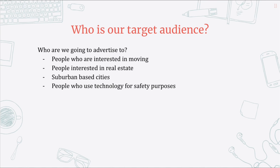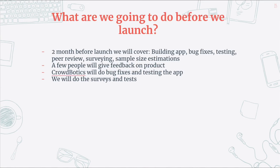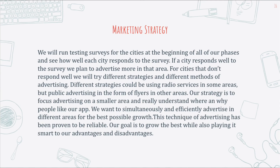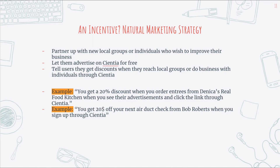Here's our market strategy presented to you by Cultural Hub. Our target audience are people interested in moving, real estate, and suburban-based cities. We will advertise in public places such as buses, radio, etc. We will also selectively advertise on online platforms such as LinkedIn, YouTube, and Facebook. In the two months before the release, the app will be made and tested by Crowdbotics. We will also be getting feedback on the app by asking people to try it. First, we run surveys and see how well ECU responds. If ECU responds well, we will generally advertise more of it; if not, we'll try different strategies. For phase one, we'll start advertising to four suburban cities and add five more after steady growth. A venture capitalist will kickstart our project. Phase two includes adding 10 more cities. Phase three includes advertising all around California. Phases four and five will use data from phase three to advertise more efficiently. As a method of natural marketing, we wish to reach local groups and individuals, improving business for them and us.